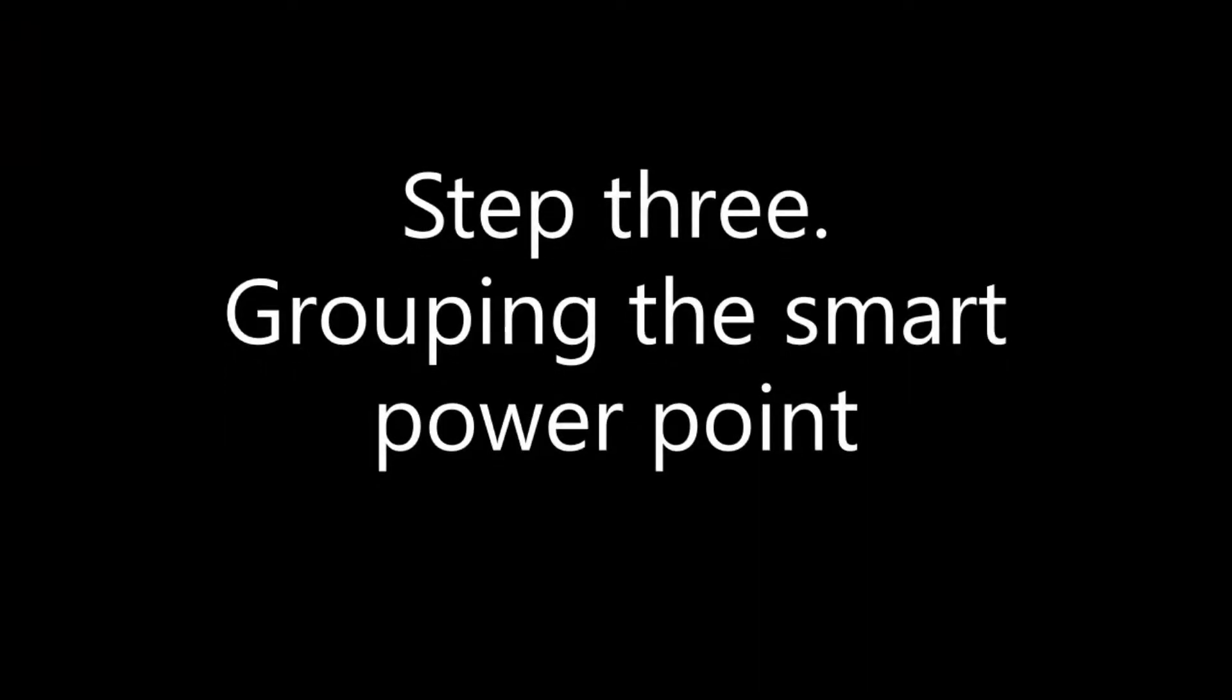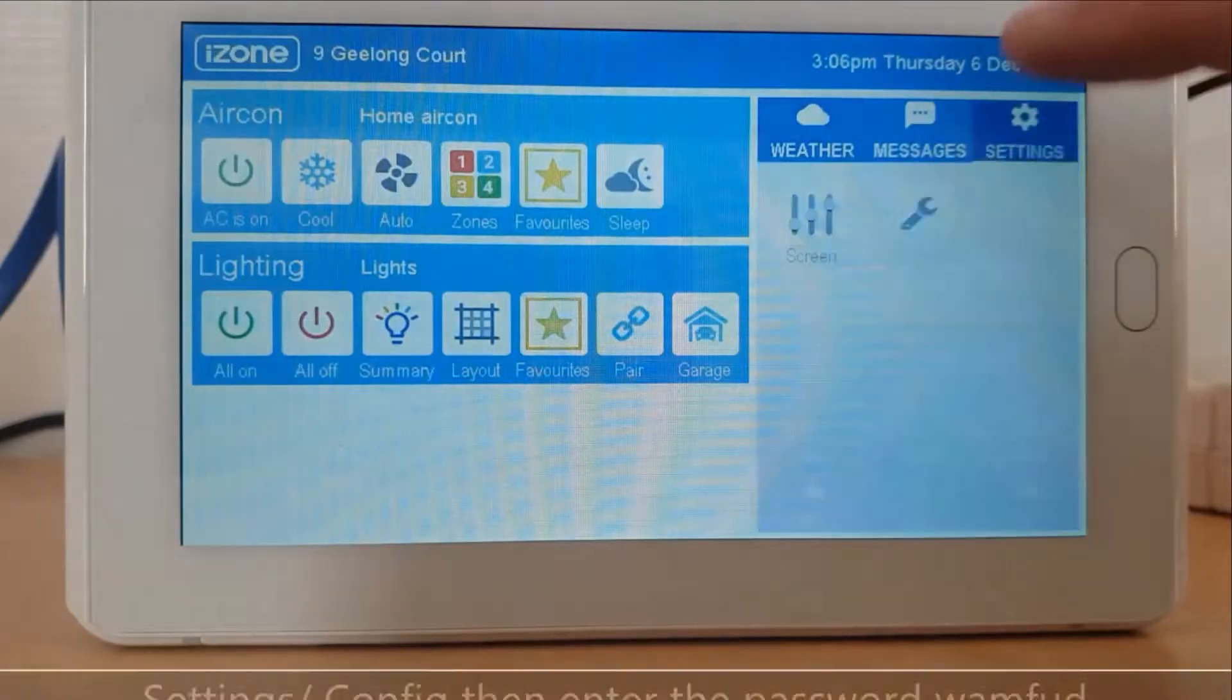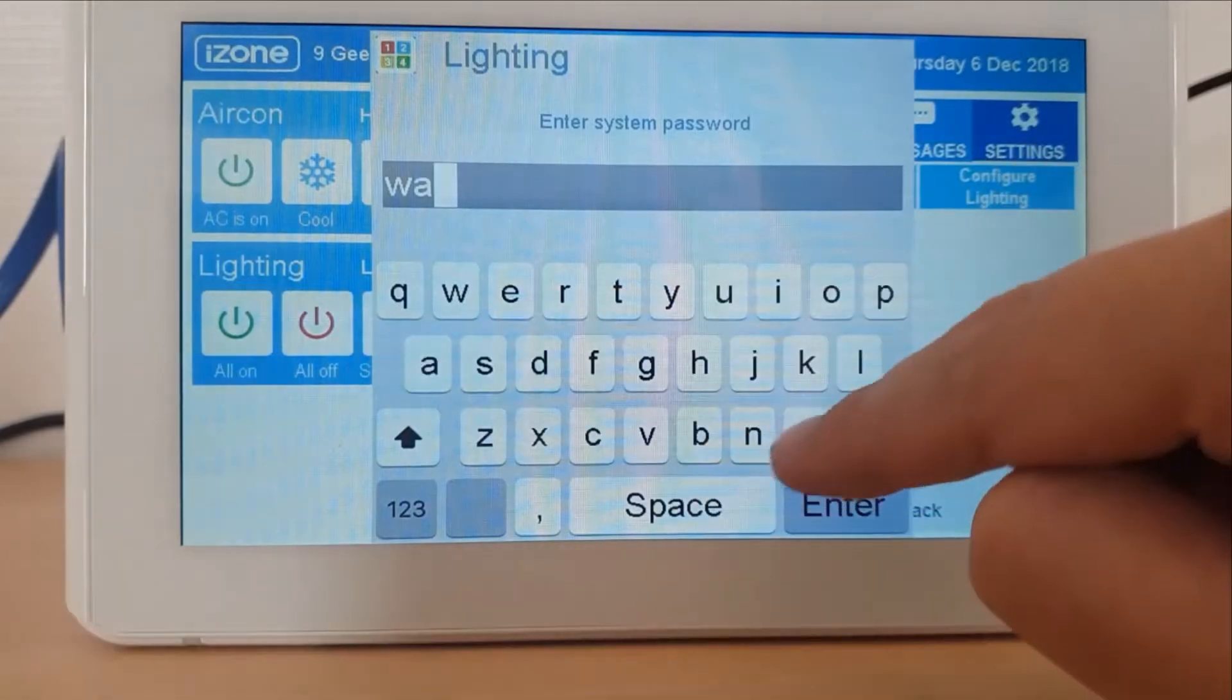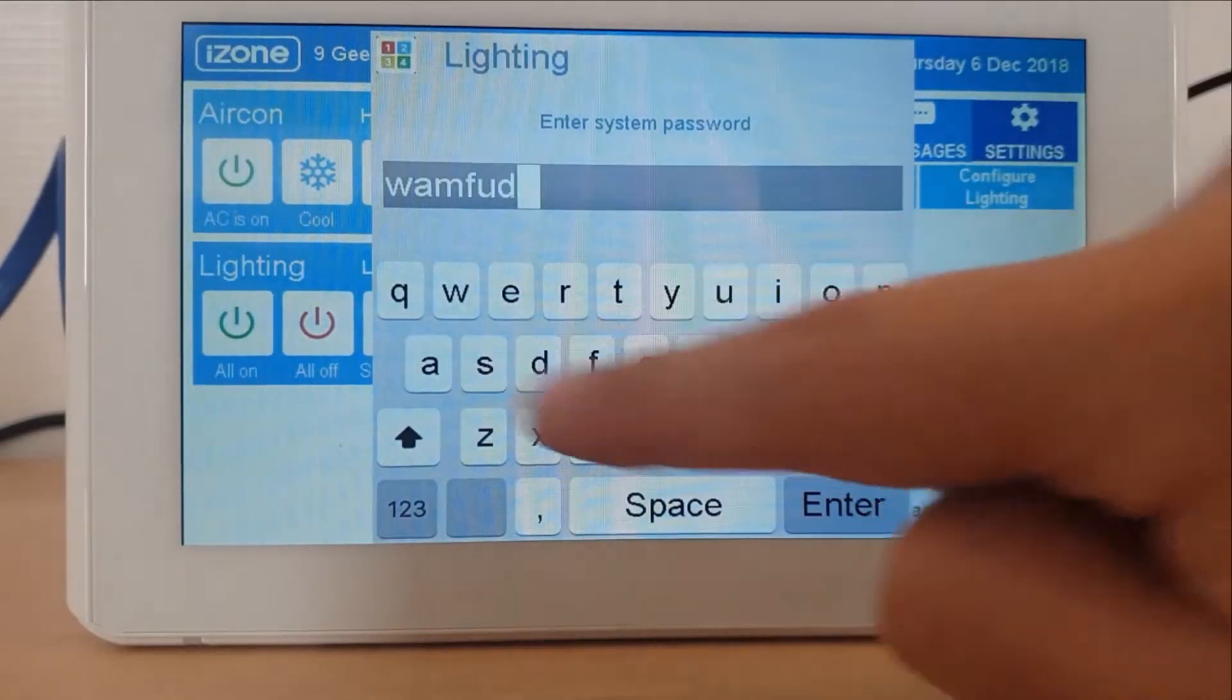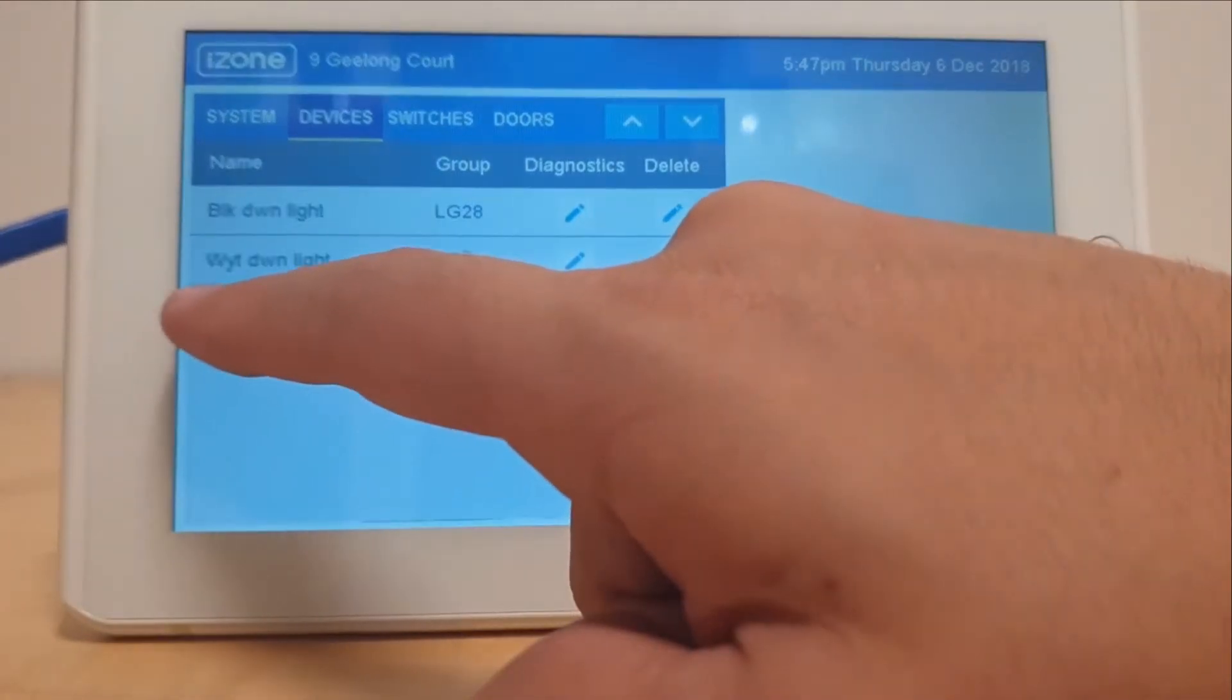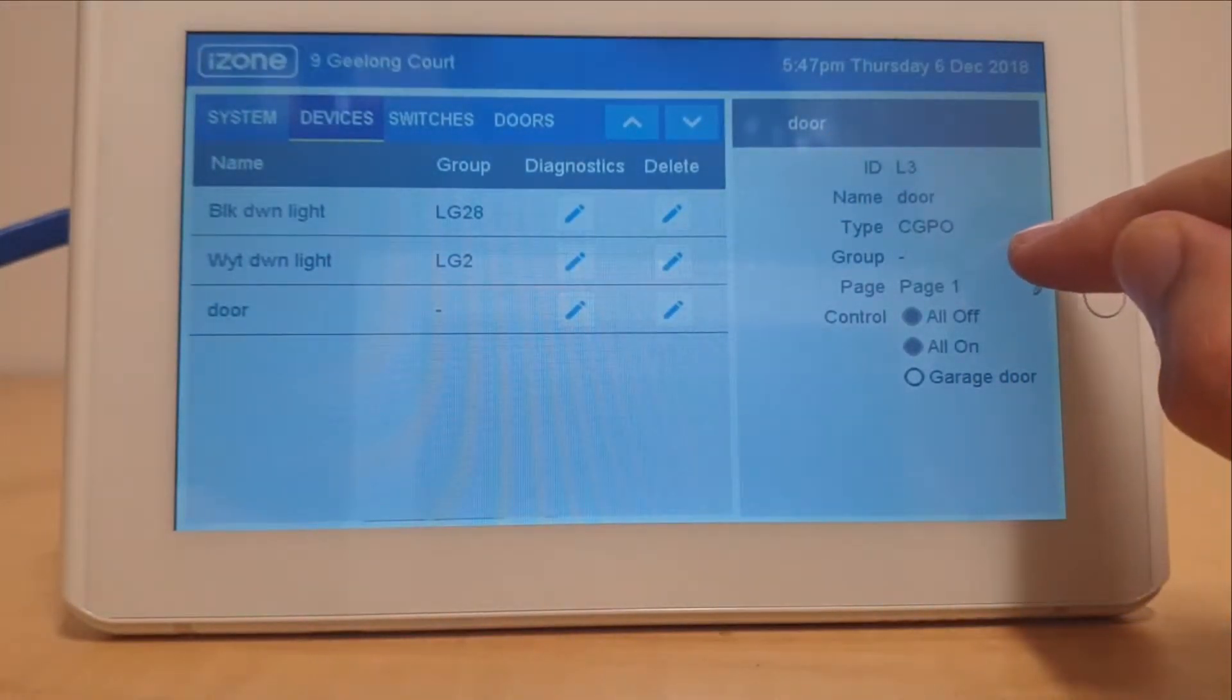Step 3: Grouping the smart power point. Next go to settings, configuration, then configure lighting and enter in the system password. Now select the devices menu, our smart power point, and then press the pencil under group.